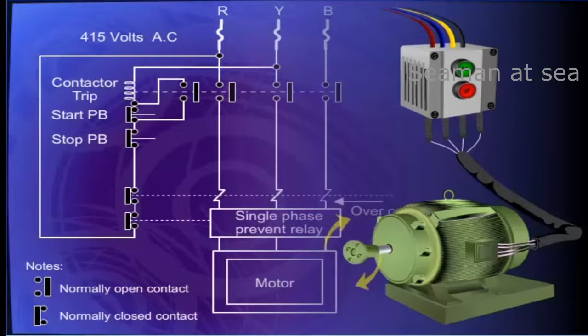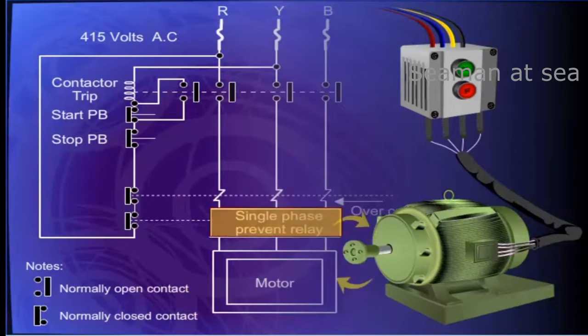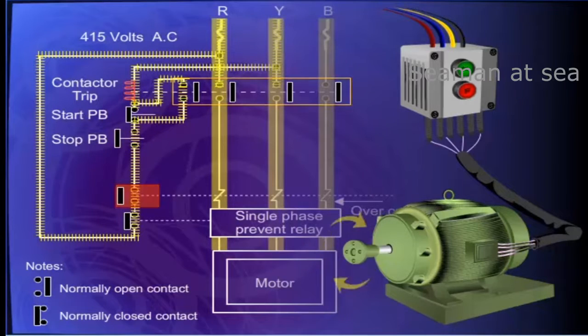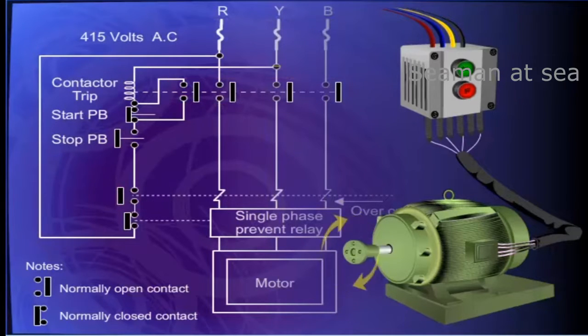DOL starter also has protection devices such as overload relay and single phase protection relays, which are normally closed contacts. If the protective device contact opens due to a relevant fault, the contactor drops and stops the motor.